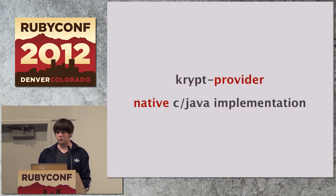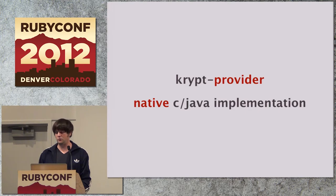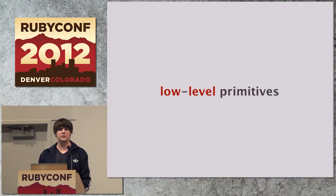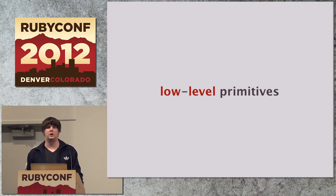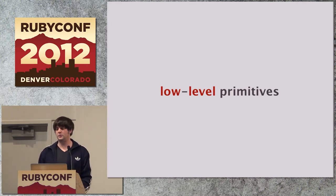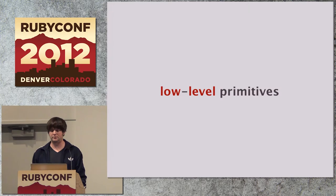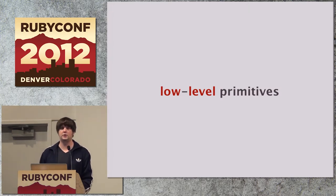Let's have a look at the provider layer. A provider is a native implementation — if you're on a C-based Ruby, then it's written in C; otherwise, for JRuby, it would be written in Java. What it mainly does is implement all those low-level primitives that you need in crypto, such as digests, ciphers, signatures, and so on.